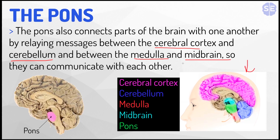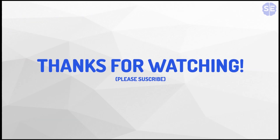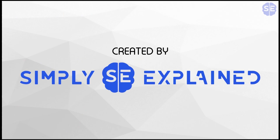As demonstrated in this diagram, the cerebral cortex and the cerebellum can communicate, and the medulla and midbrain can also communicate, because the pons allows them to and conveys the messages. This marks the end of this video. Thanks for watching. Please subscribe so we can become monetized. This video was created by Simply Explained.